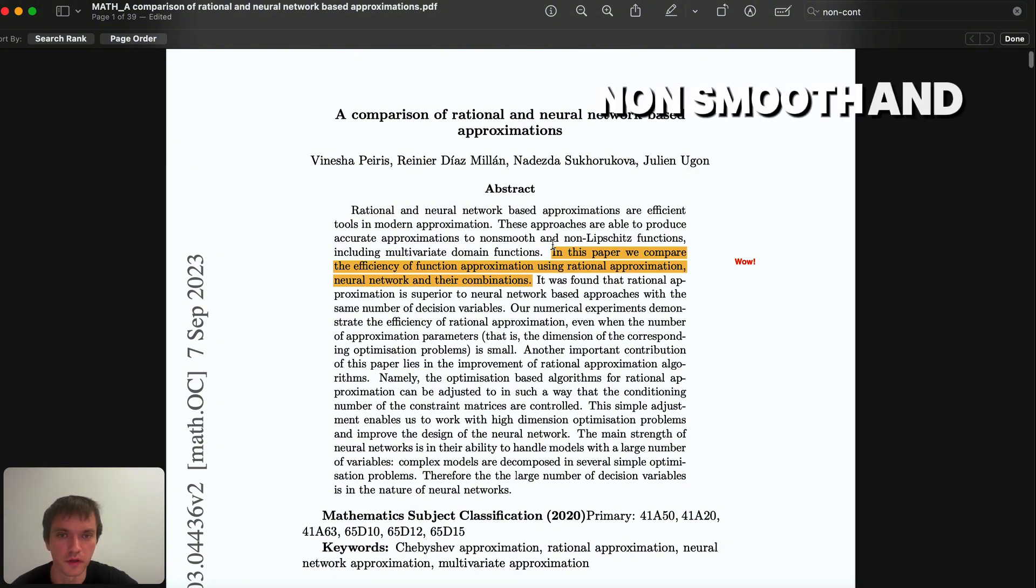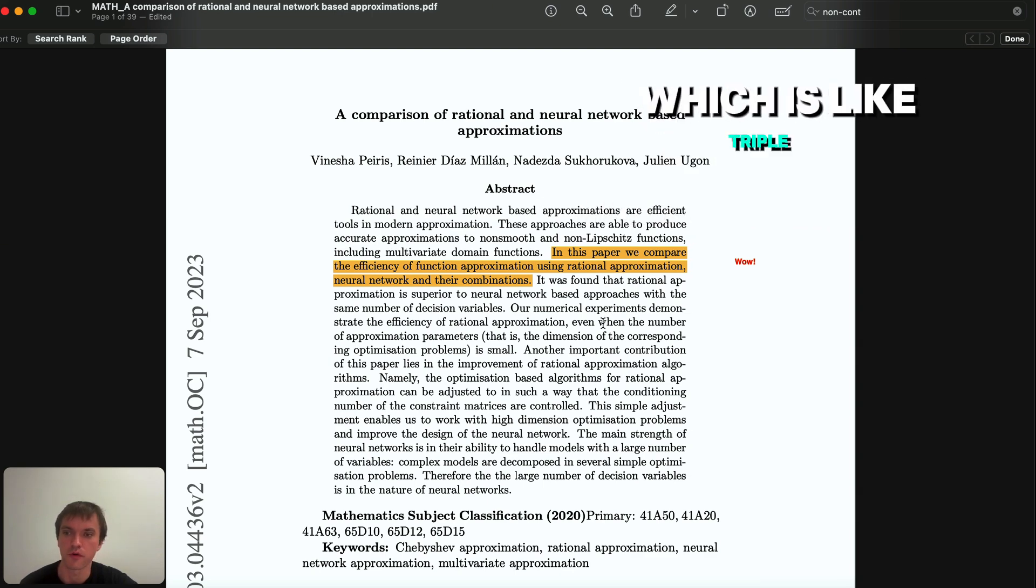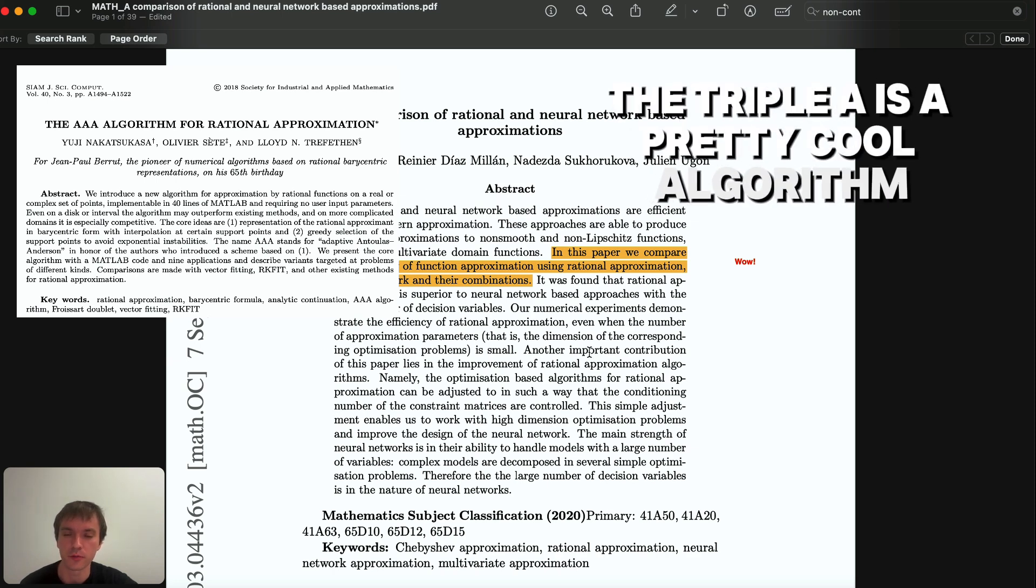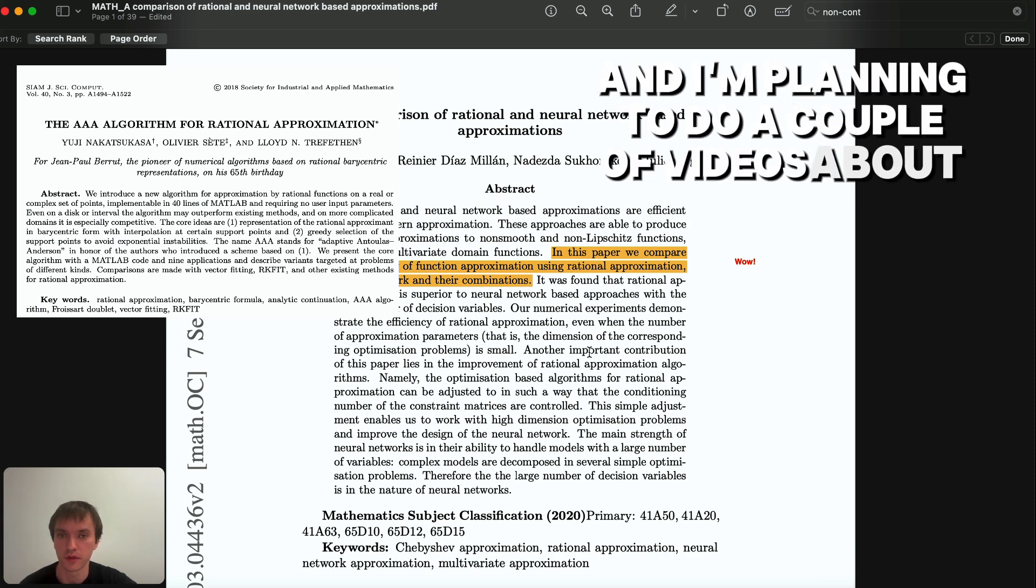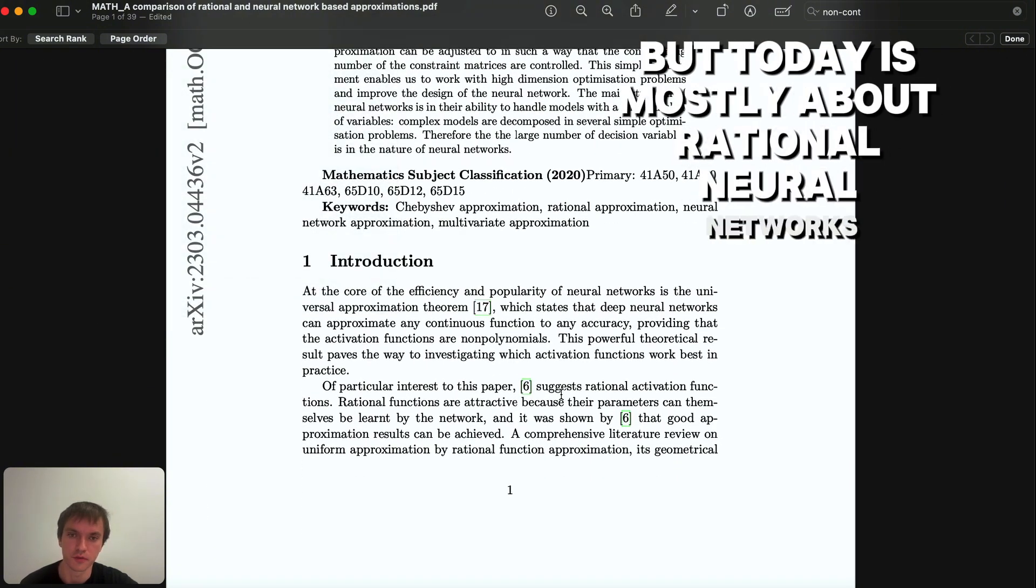They compare this versus classical rational approximation, which is like the AAA algorithm. The AAA is a pretty cool algorithm and I am planning to do a couple of videos about it, but today is mostly about rational neural networks.